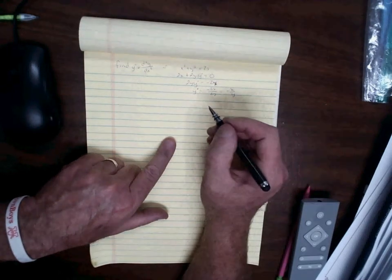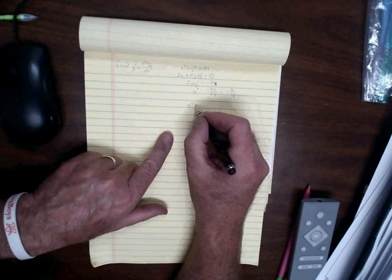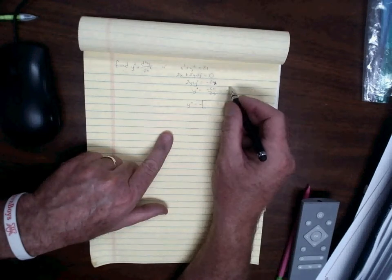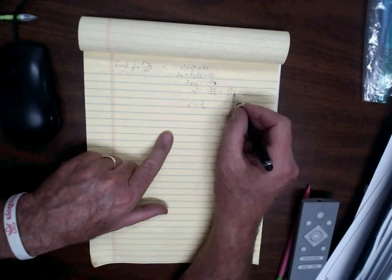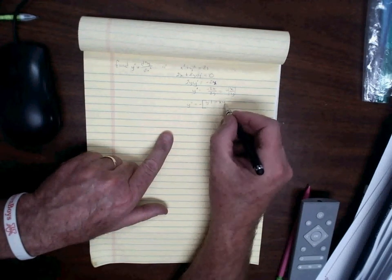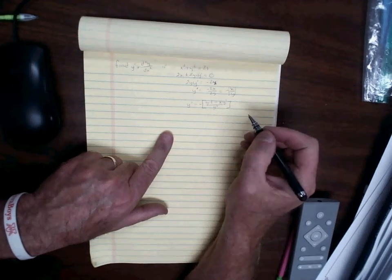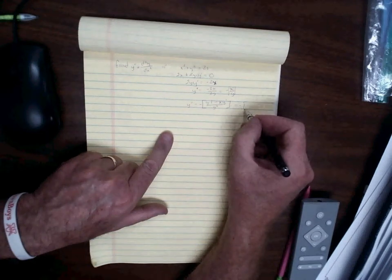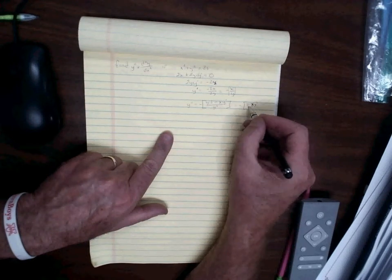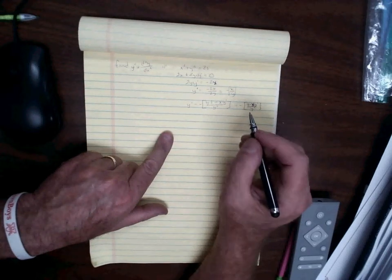That's y prime. Now to find the second derivative, y double prime, I apply the quotient rule. Pulling the negative out front, it's the denominator times the derivative of the numerator minus the numerator times the derivative of the denominator, all over the denominator squared. This gives y double prime equals negative (y minus x times y prime) over y squared.